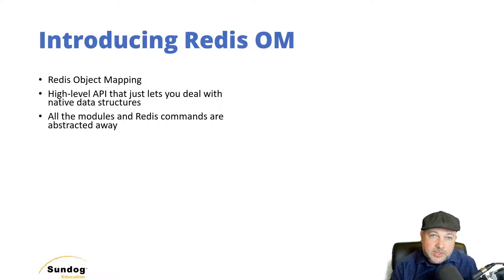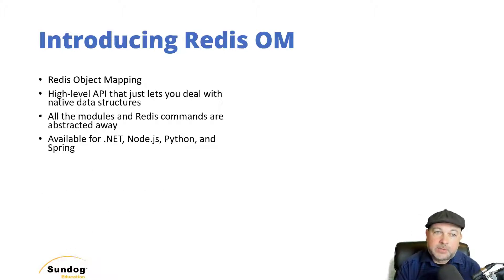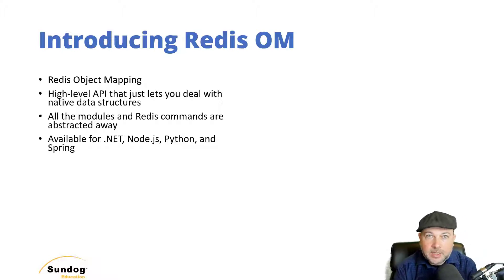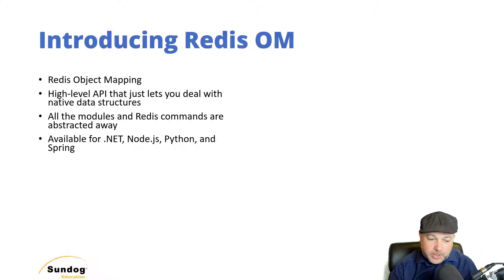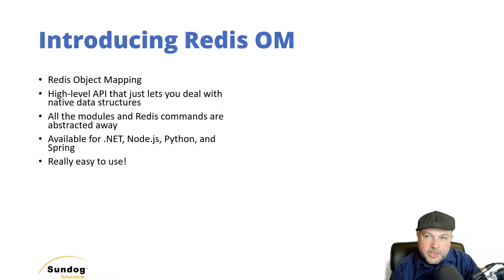Within Python, for example, I can just deal with Python classes, and Redis OM will magically take care of storing and querying that data with very simple commands like save or find. It's a much easier way to interact with Redis JSON, Redis Search, and even Redis Core. All the modules and Redis commands under the hood are abstracted away, so it's just like writing a normal script. It's available for several languages: .NET, Node.js, Python, and Spring.